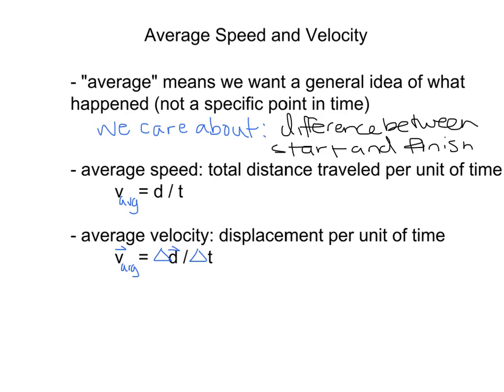So I'm giving you here a definition for average speed. It's the total distance traveled per unit of time. And we write v_avg = d / t, or average speed is distance over time. And the average velocity is the displacement per unit of time. So the average velocity is equal to Δd / Δt, or in other words, the change in position over the change in time.